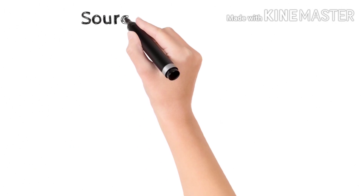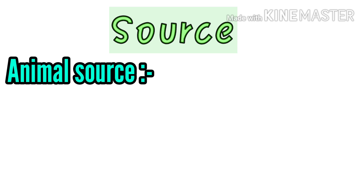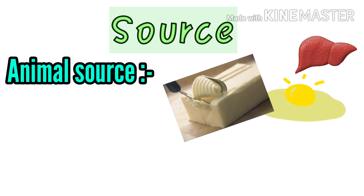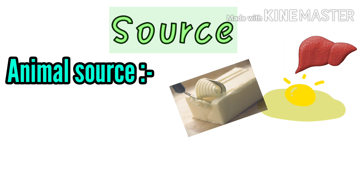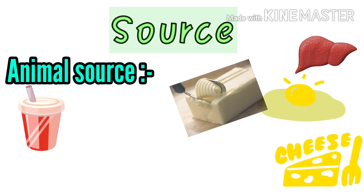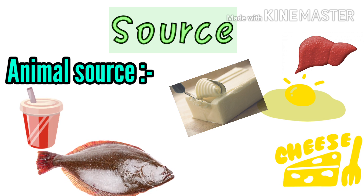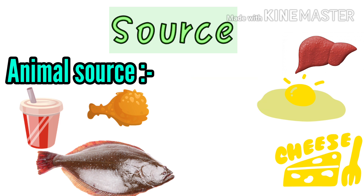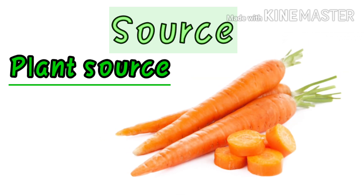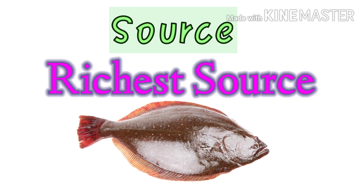Source and RDA values. Animal sources include liver, egg, butter, cheese, milk, fish, and meat. Plant sources include carrot. The richest source of vitamin A is halibut fish liver oil.